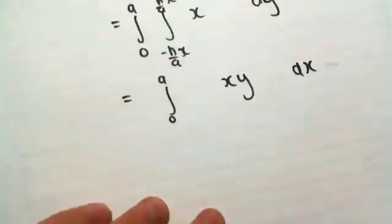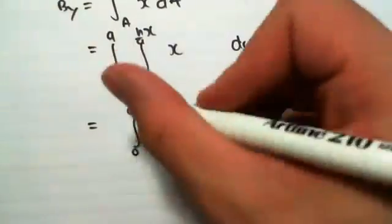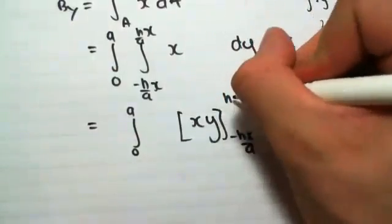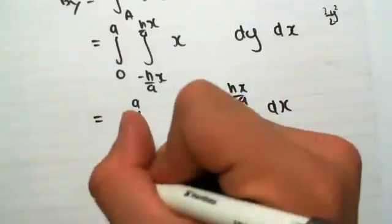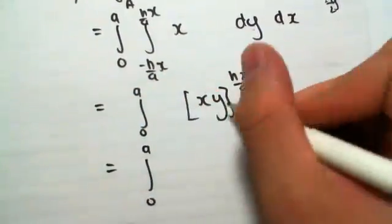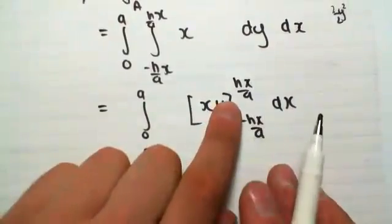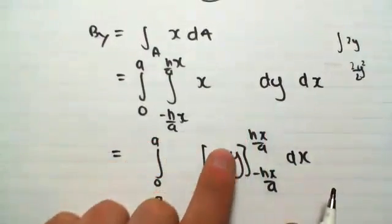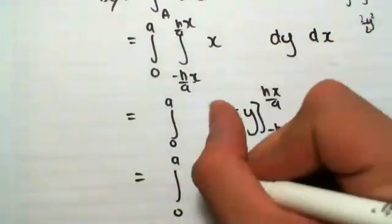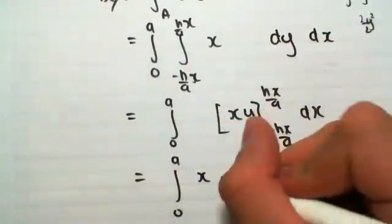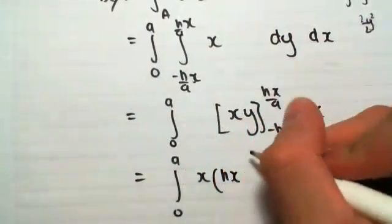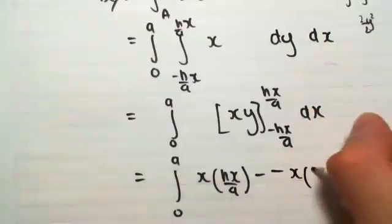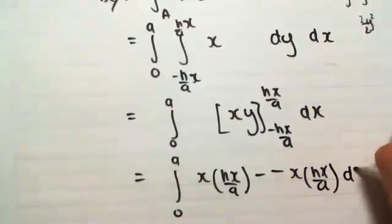Okay? That would be the answer. So if we get xy, the values we're going between are minus hx on a to hx on a, substituting them in for, we're going to substitute it in for y. Because we integrated over dy, that's our constant we're going to be subbing it in for. So we're going to be subbing it in. So we're going to have x outside of hx on a, minus minus x outside of hx on a, dx.